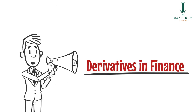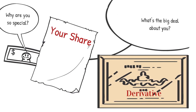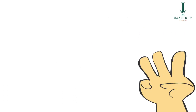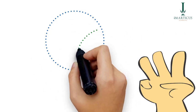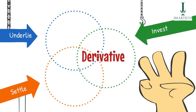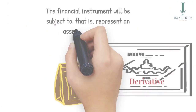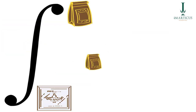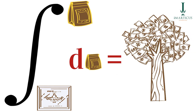Derivatives in finance. The accounting standards board has a characteristics-based definition for a derivative. In order to be called a derivative, a financial instrument should underlie, invest and settle an asset or a liability. So, the financial instrument will be subject to — that is, represent an asset or a liability. A derivative is integral for the financial inclusion of the variable it underlies.